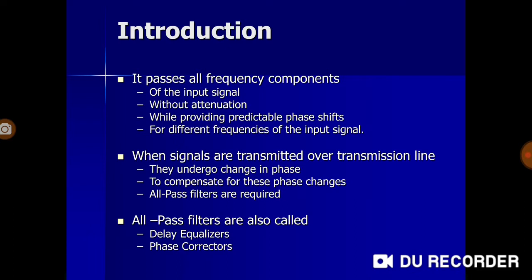We are intentionally producing some phase shift into the signal, because there will be predictable phase shifts. This is where the most important focus comes in — we actually create some phase shifts between the input and the output signal, moving a signal to a certain phase with the help of this filter. So by definition, an all-pass filter passes all frequency components without attenuation and provides predictable phase shifts.